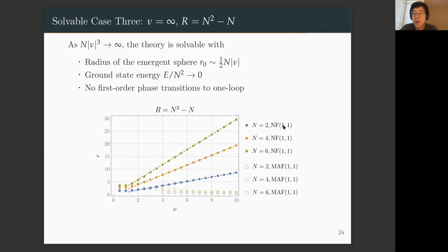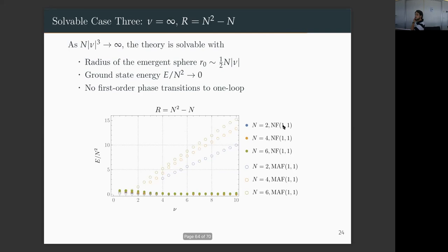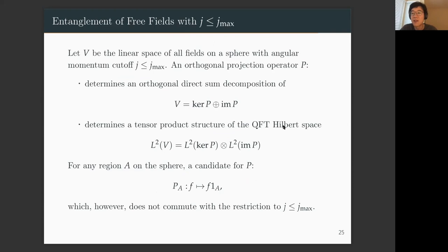The notation one comma one means in each generative flow there is only one hidden layer — two layers total. From an observables perspective, the radius and the energy from our numerics agree quite well with our semi-classical analysis. Another thing we did in our paper is trying to understand the entanglement structure of the ground state wave functions. Because we now have the wave function, we can compute quantum mechanical properties like entanglement entropy.